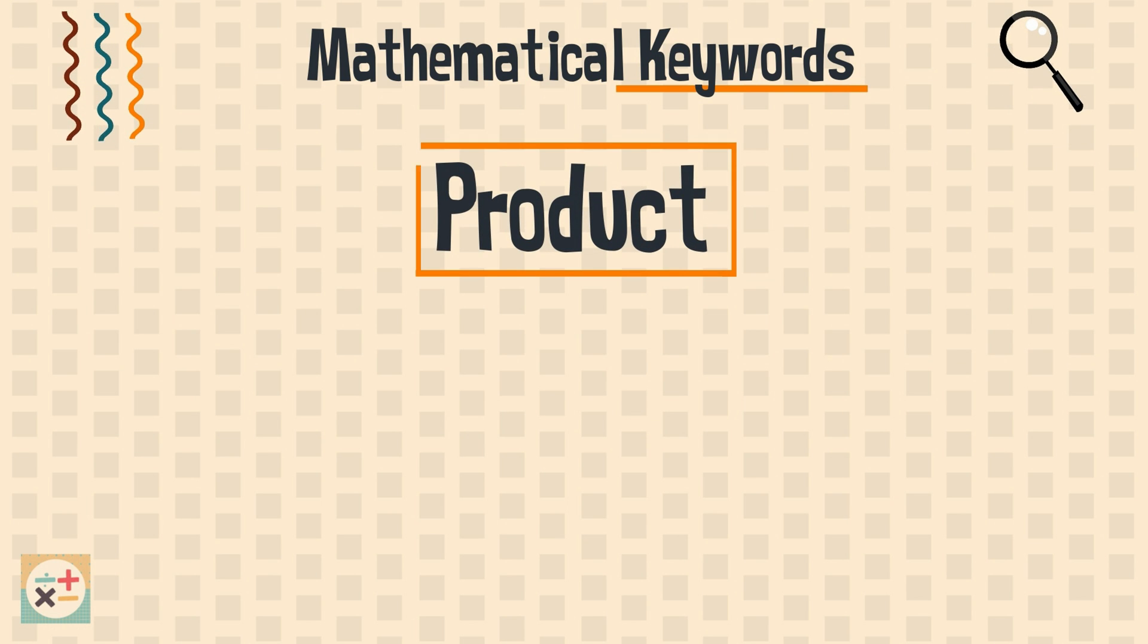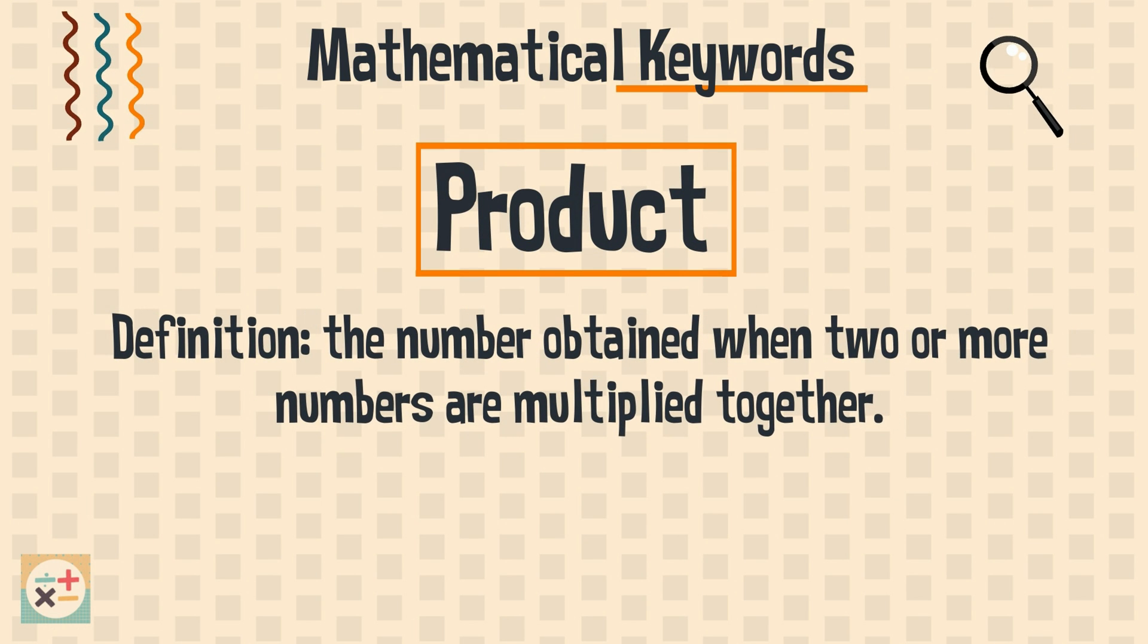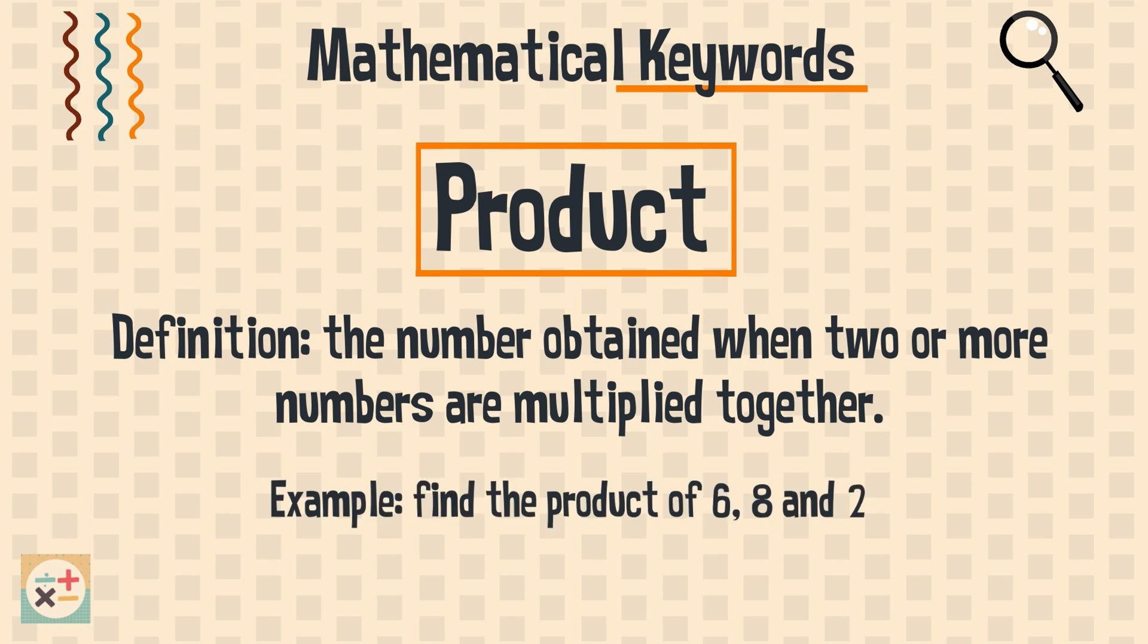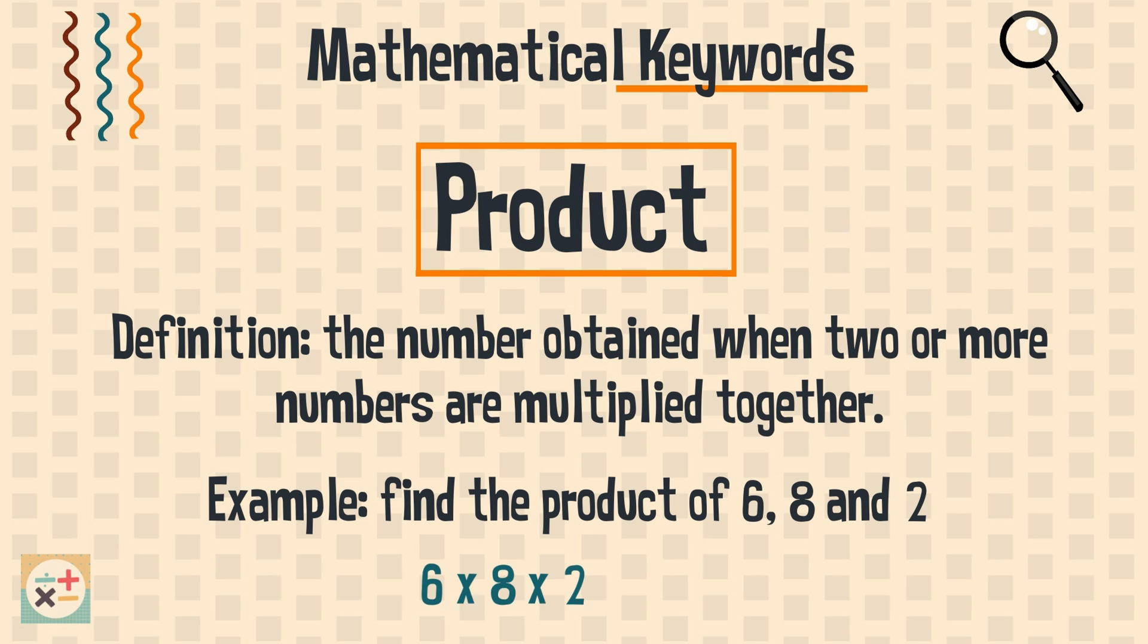Product. The number obtained when two or more numbers are multiplied together. For example, the product of 6, 8, and 2 is 96.